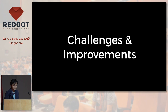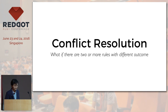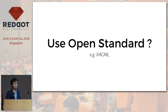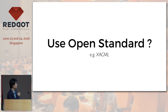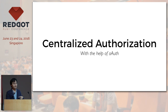For challenges and improvements, I think it's about performance — I still haven't touched that yet — and also conflict resolution: what if there are two or more rules with different outcomes? If you come from an enterprise background, you may have heard of XACML, which is the standard for fine-grained authorization. It's actually nice, but very big and bloated, so I think we need something like what JSON is for XML — something easier to implement. We can also do centralized authorization for big enterprises, with one central server storing all the rules and using OAuth to help other applications request whether a document can be read or not.